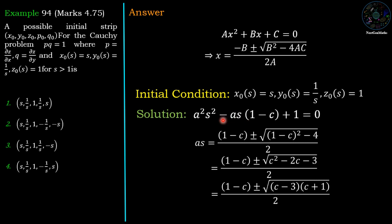Applying the quadratic formula where the coefficient of as is −(1 − c): as = [(1 − c) ± √((1 − c)² − 4)] / 2. Simplifying under the square root: (1 − c)² − 4 = c² − 2c − 3 = (c − 3)(c + 1). Therefore as = [(1 − c) ± √((c − 3)(c + 1))] / 2.